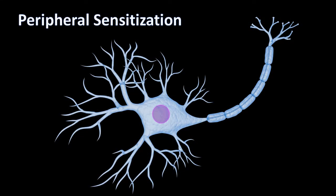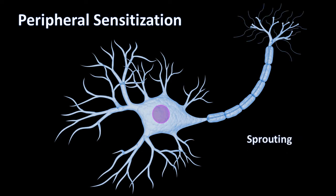When a peripheral nerve receives constant irritation, it will start to extend more branches or dendrites, increasing the number of free nerve endings. This is called sprouting. It increases the area of the receptive field, and the area surrounding the damaged tissue will start to be sensitive.